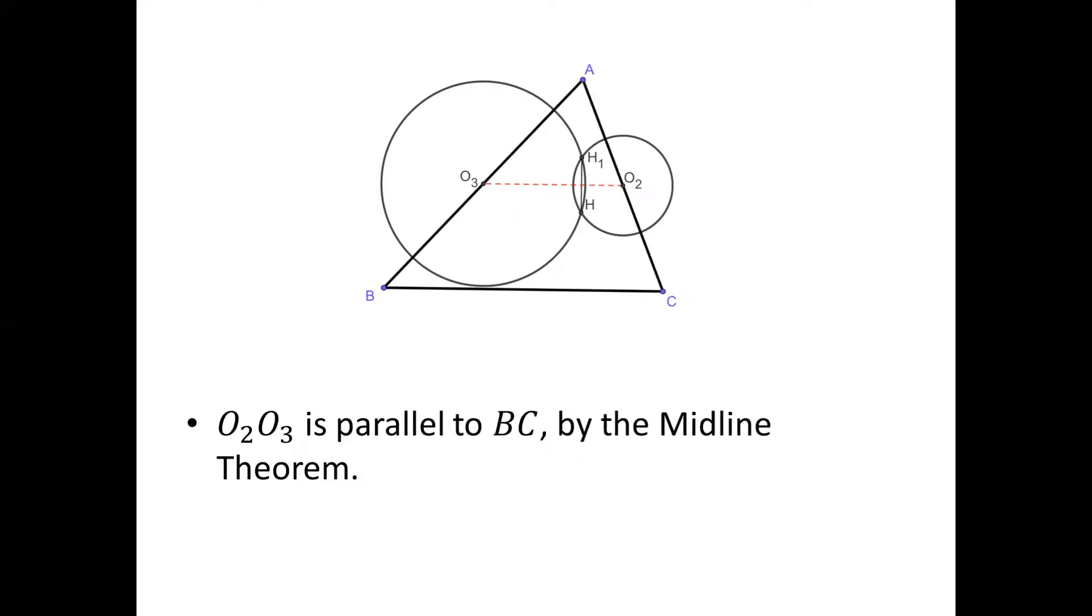On the other hand, O2O3 is the midline of triangle ABC. Therefore, O2O3 is parallel to BC based on the midline theorem. So H1H is perpendicular to O2O3, O2O3 is parallel to BC. Therefore, H1H is perpendicular to BC, and all the loops are closed completely.